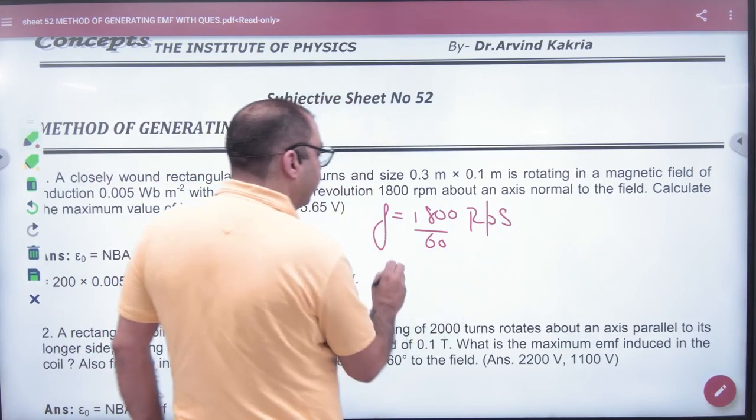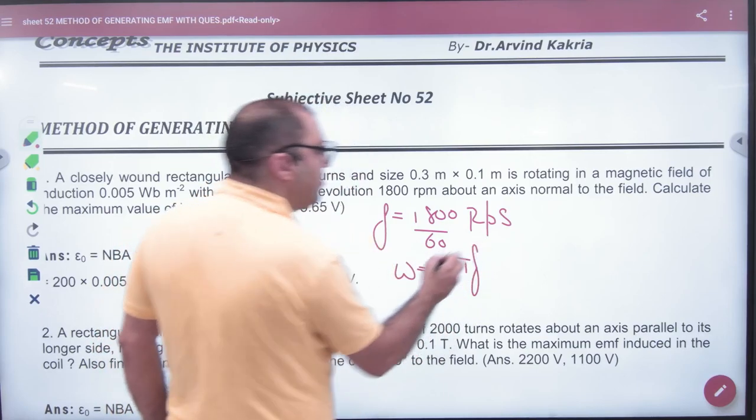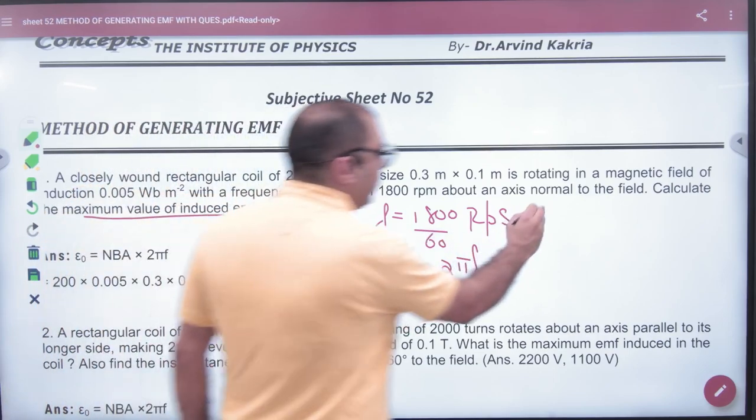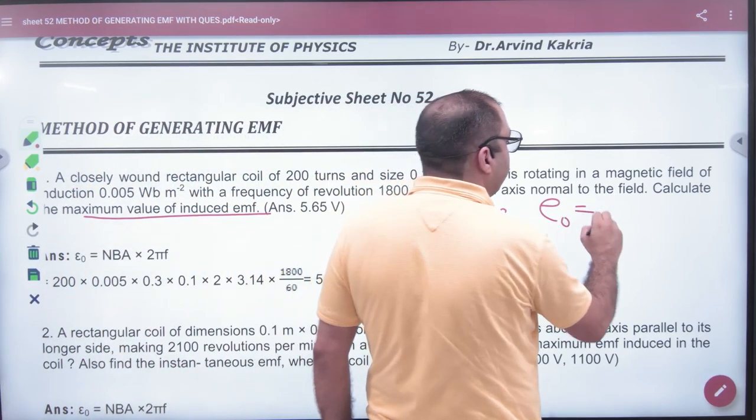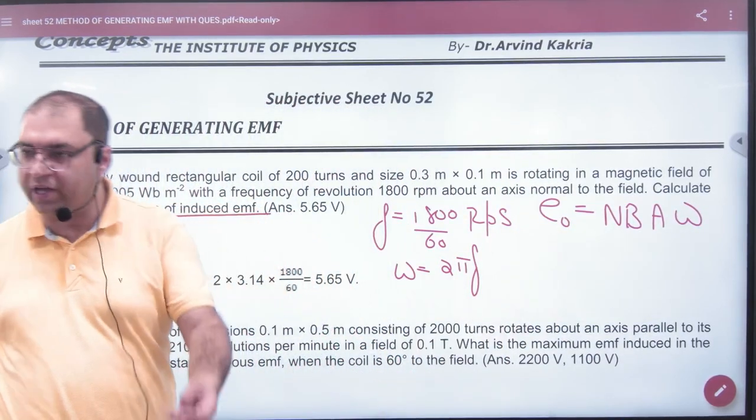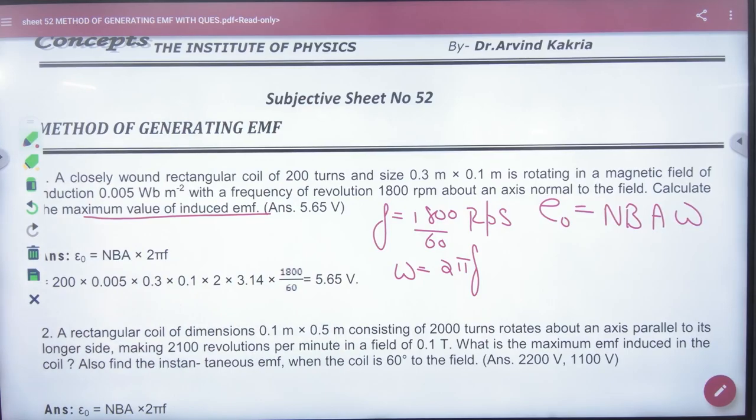RPS, omega equals 2π into frequency. Calculate maximum value of induced EMF. Now we have the formula: maximum value of induced EMF = NBA omega. N, B, A, and omega - multiply the answer. Clear.